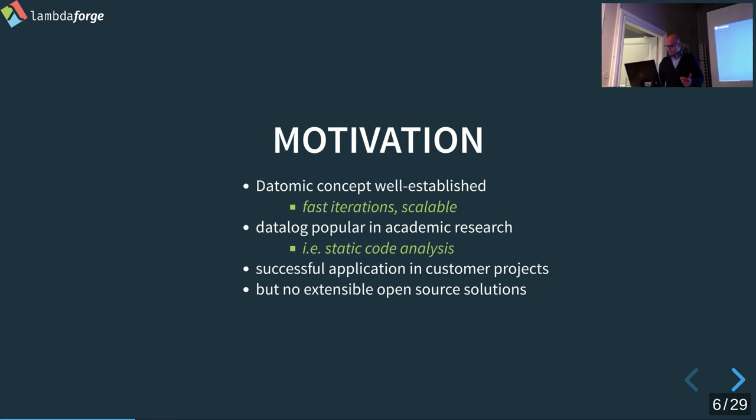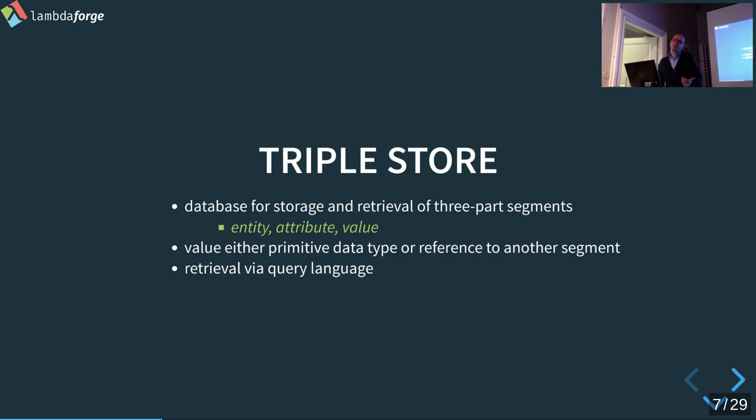Now a little background on what a triple store is. A triple store is a database that stores and retrieves three-part segments: entity, attribute, and value. A value is either a primitive data type like a string or an integer, or a reference to another segment. You only store these three elements, plus some metadata. This is the core idea.